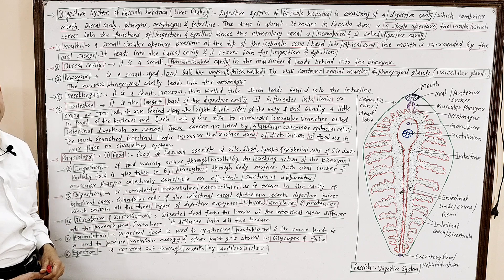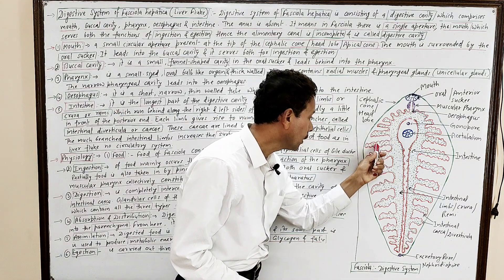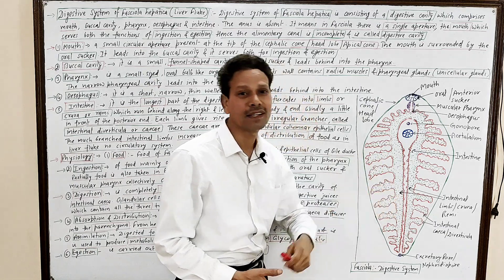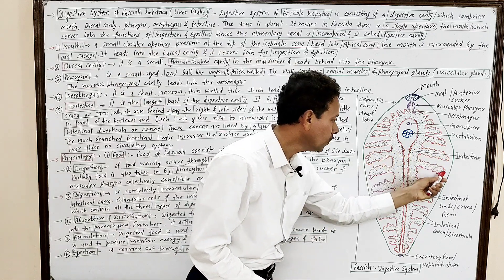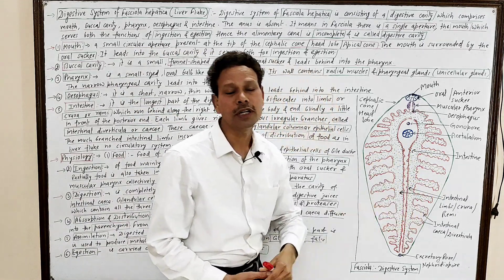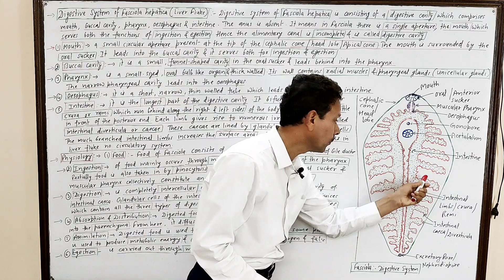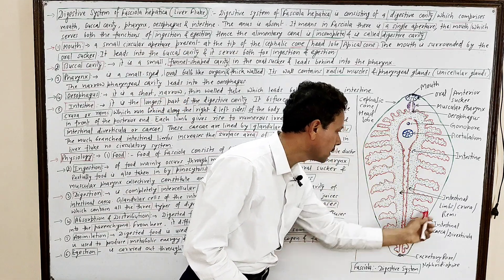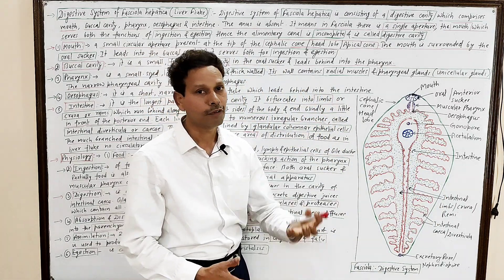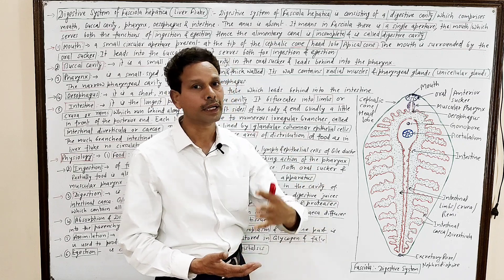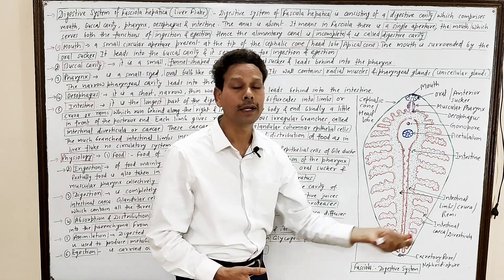Absorption: The digested food present in the lumen of the intestinal caeca simply diffuses into a special type of connective tissue called parenchyma. From the parenchyma, the digested food further diffuses into all body tissues.